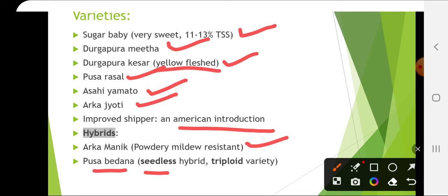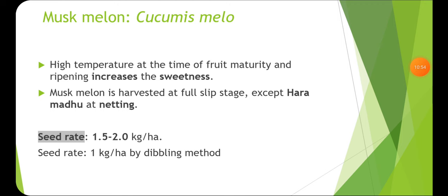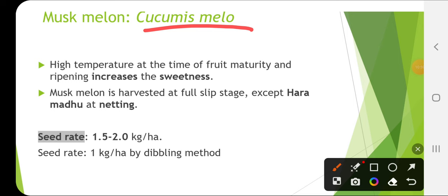Next is musk melon, Cucumis melo. High temperature at the time of fruit maturity and ripening increases sweetness, so high temperature during ripening increases TSS in musk melon. Musk melon is harvested at full slip stage.